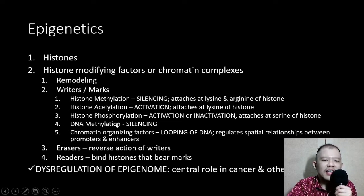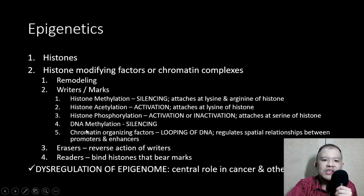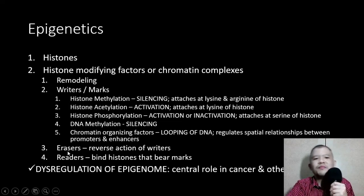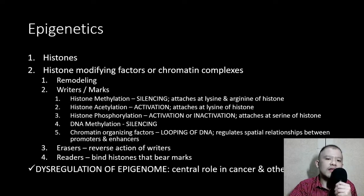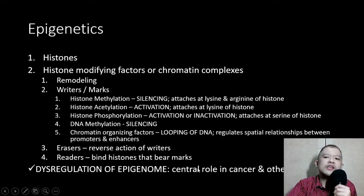When a methyl group attaches itself to the DNA, it causes irreversible silencing. When you have chromatin-organizing factors as histone-modifying factors, it causes the looping of DNA, thereby regulating spatial relationships between promoters and enhancers. We also have erasers and readers. Epigenetics are important because when they are dysregulated — when there is a disturbance in the epigenome — it causes diseases; they have a central role in cancer and other diseases.